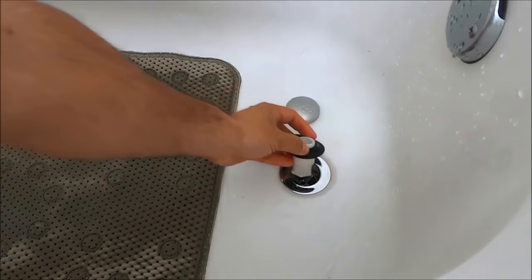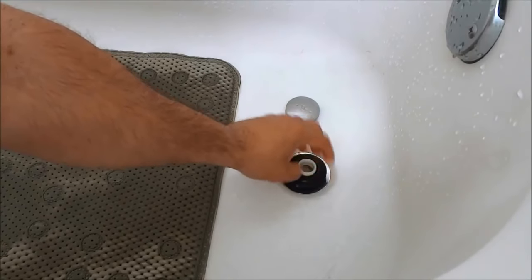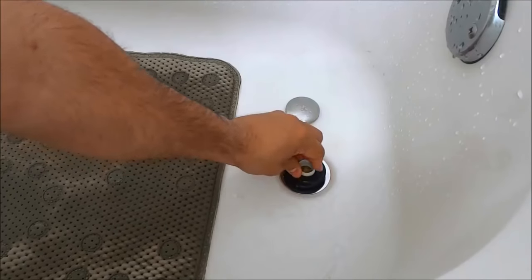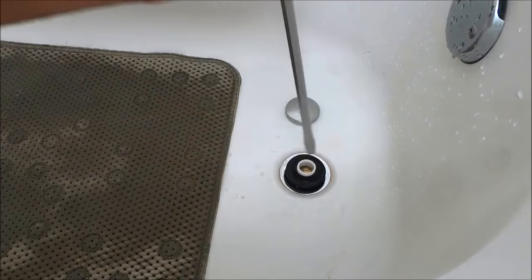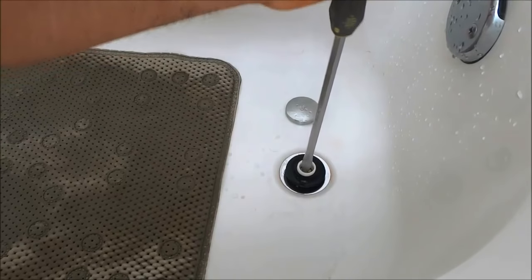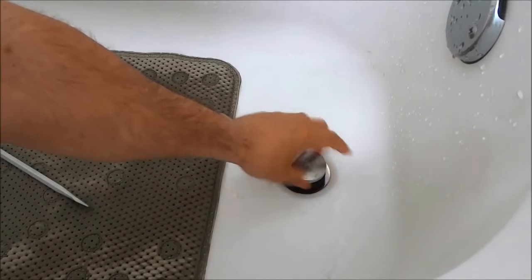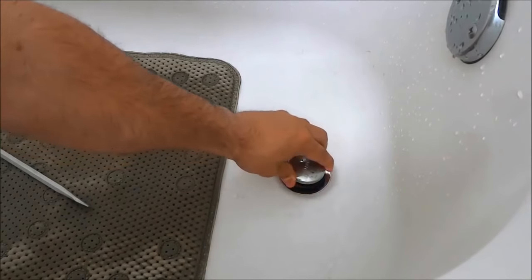So you would take your new drain stopper, place it in the position just like that, tighten it with your hand. Then you would use your screwdriver to give it just a little extra turn or part of a turn so that it is completely tightened down. Then you would take the cap and put it back on and tighten the cap on just like that.